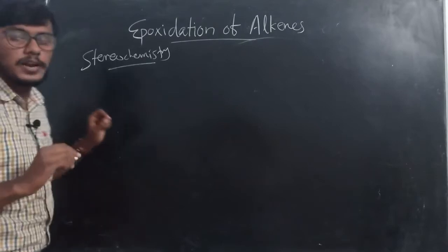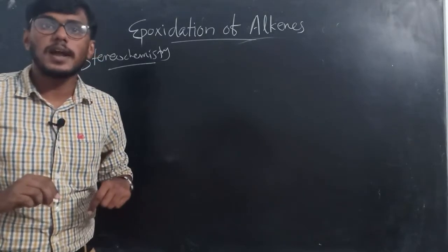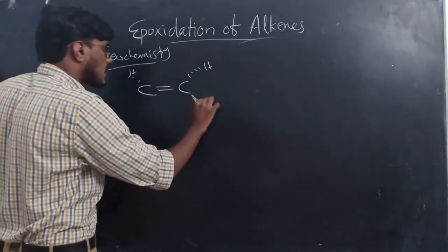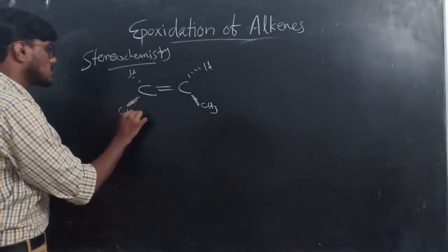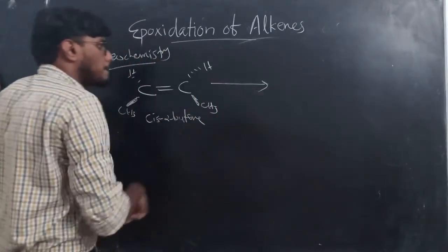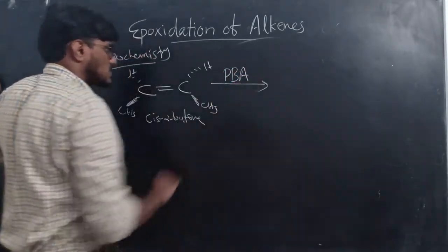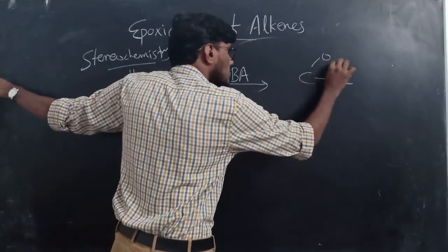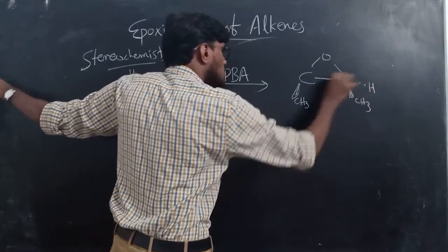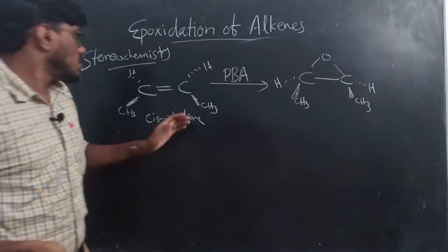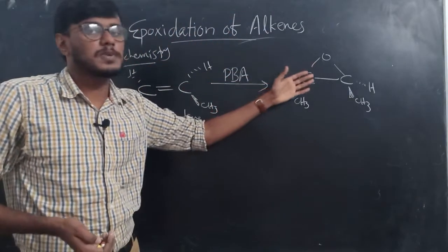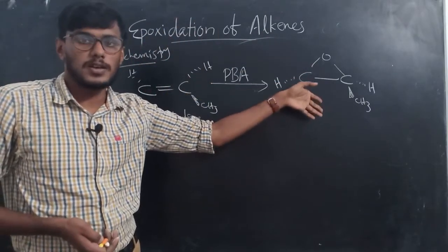The stereochemistry: as already mentioned, this is a stereospecific syn addition reaction. For example, taking a cis alkene (cis-2-butene with CH3 groups on the same side), the stereochemistry of the product is determined by the stereochemistry of the substrate. Syn addition of oxygen takes place, so a cis epoxide is formed from a cis alkene.